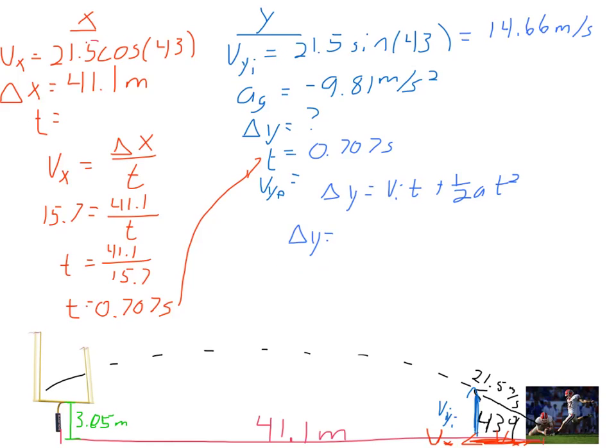So this equation right here, our favorite, is exactly what we're going to want to use. And now we plug in and solve. Delta Y, what I'm looking for, equals VI 14.66, the initial velocity that came from that 21.5 sine 43 times my time 0.707 plus 1 half negative 9.81 times 0.707. This is T squared. So now it's, once again, a little bit of calculator work.